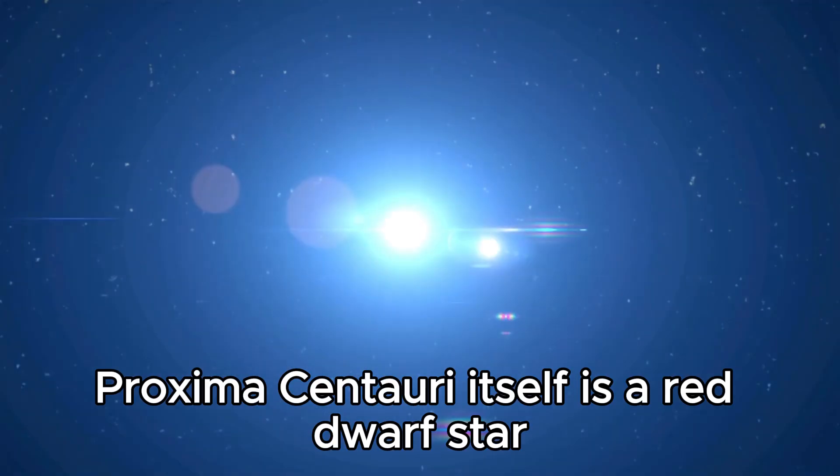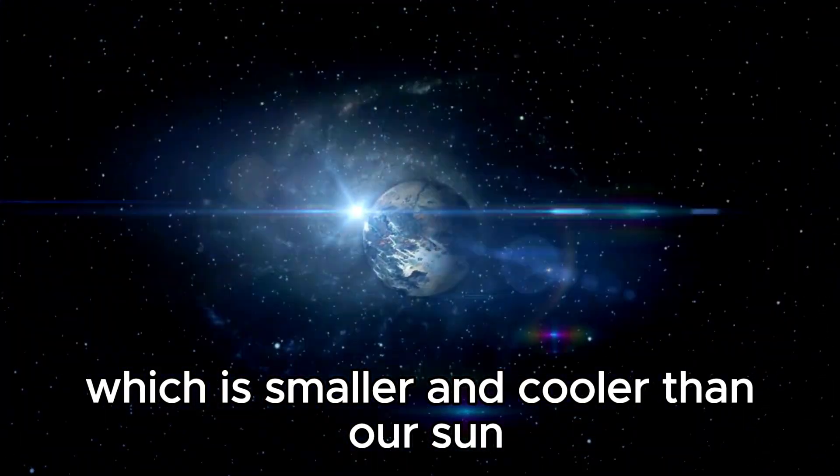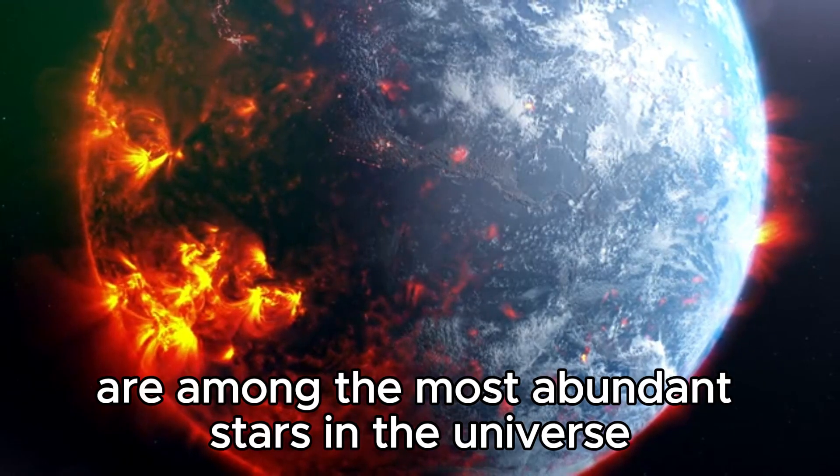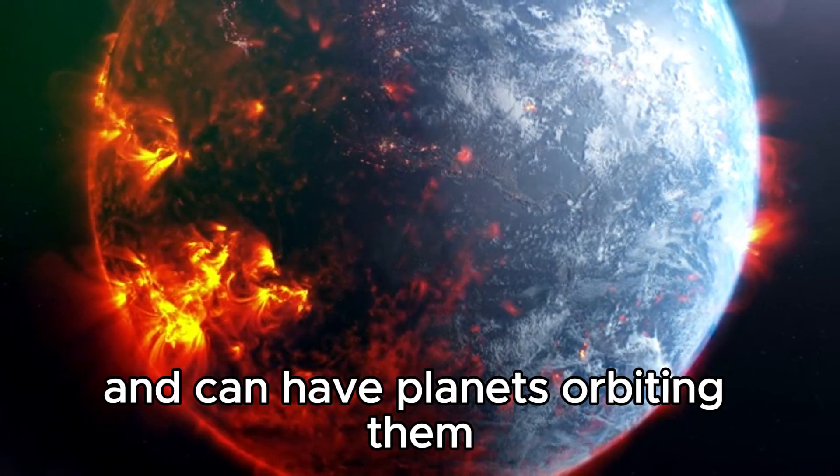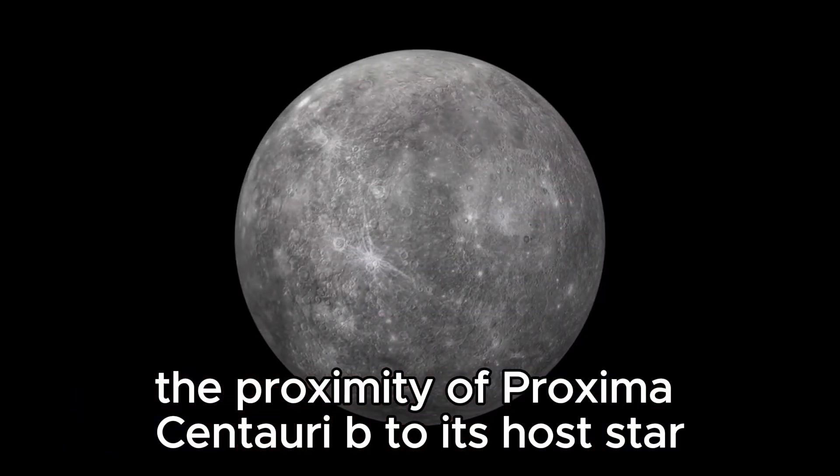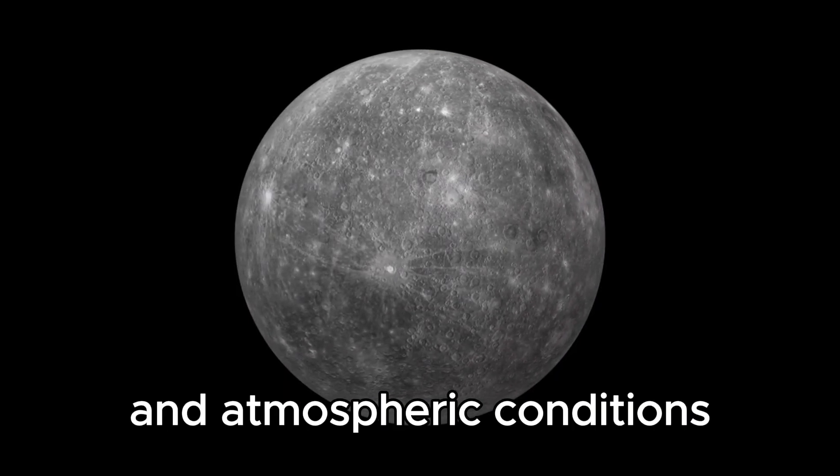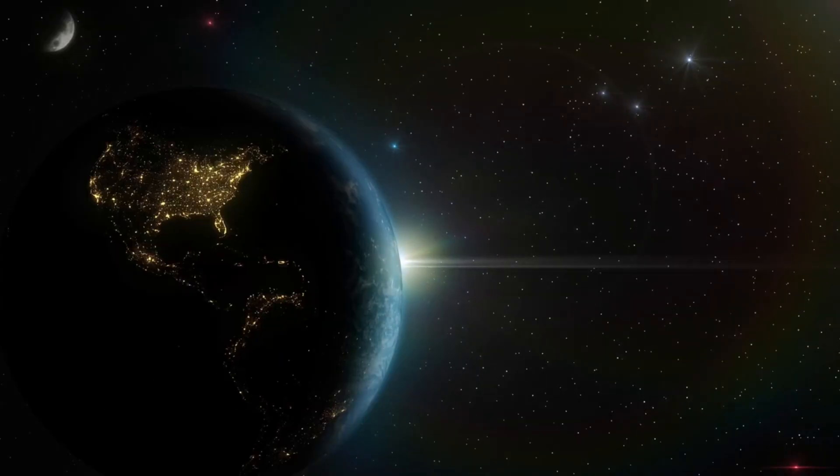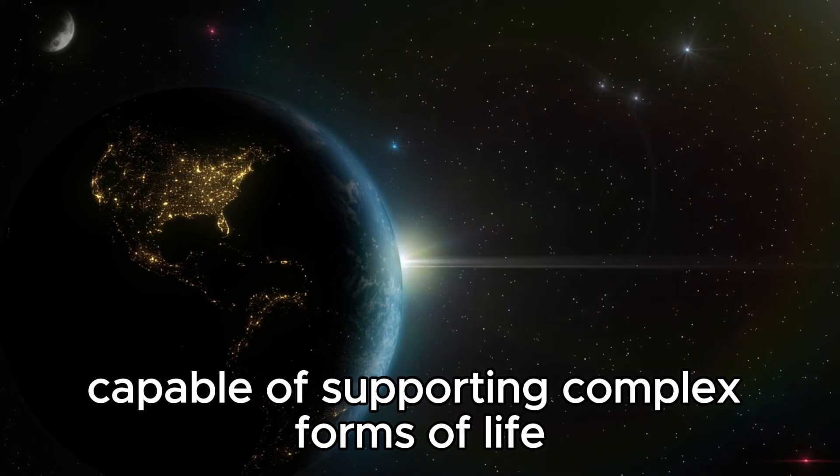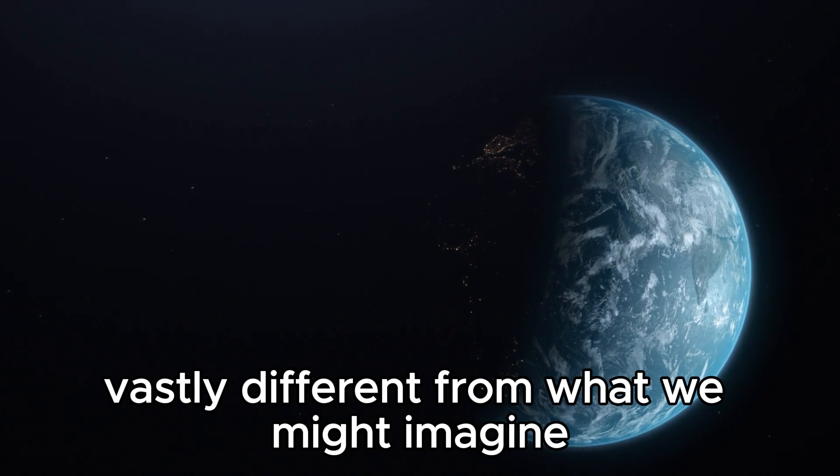Proxima Centauri itself is a red dwarf star, classified as a type M star, which is smaller and cooler than our Sun. Despite its diminutive size, red dwarfs are among the most abundant stars in the universe and can have planets orbiting them within their habitable zones. The proximity of Proxima Centauri B to its host star raises intriguing questions about its potential climate and atmospheric conditions. Could this distant world have an atmosphere similar to Earth's, capable of supporting complex forms of life?